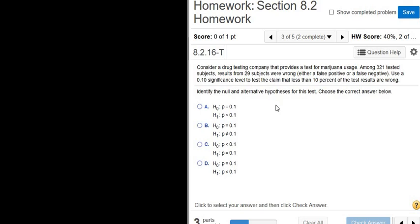Consider a drug testing company that provides a test for marijuana usage. Among 321 tested subjects, results from 29 subjects were wrong, either a false positive or a false negative. Use a .01 significance level, that's going to be our alpha, so alpha in this case is 10%, so .10.